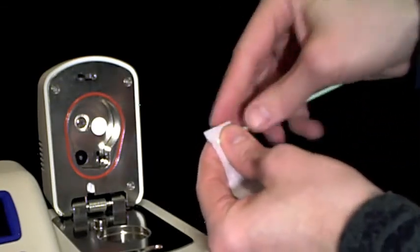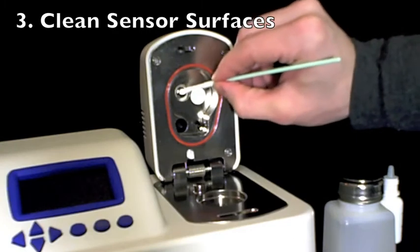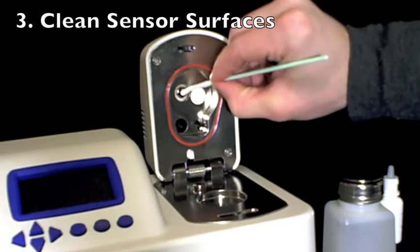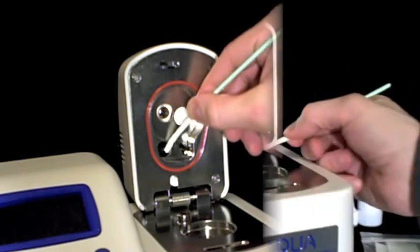In the next step, we use the same technique to clean the surfaces of the sensors within the sensor block. First, take a clean kimwipe, apply cleaning solution, and clean the thermopile, the mirror, and the optical sensor.